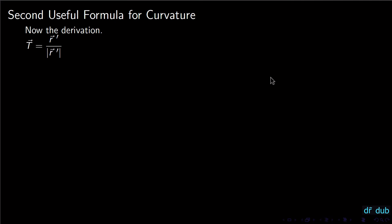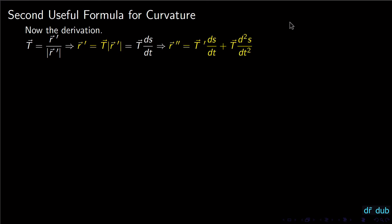Now let's derive the second formula. The unit tangent vector is T = R'(t) / |R'(t)|, so solving for R' gives us R' = T · |R'|, which we can also write as T · (dS/dt). Taking the derivative, R'' equals T' · (dS/dt) + T · (d²S/dt²) by the product rule. These two expressions for R' and R'' are the formulas we'll use next.